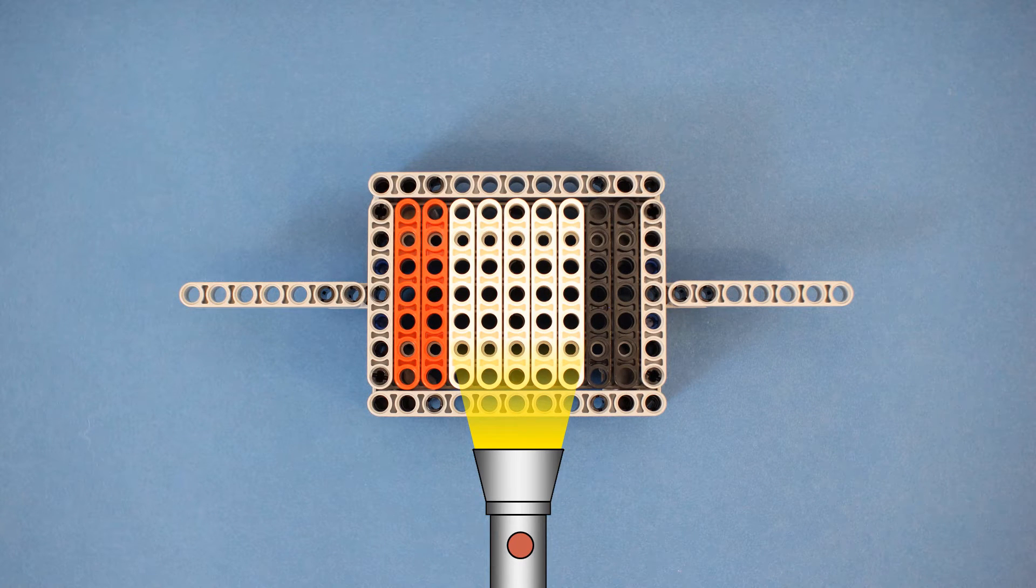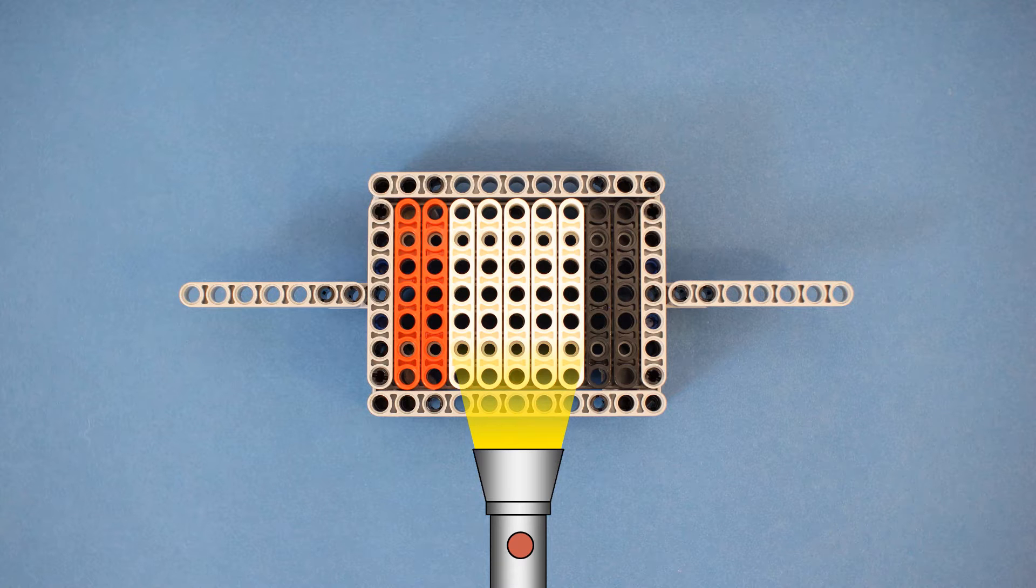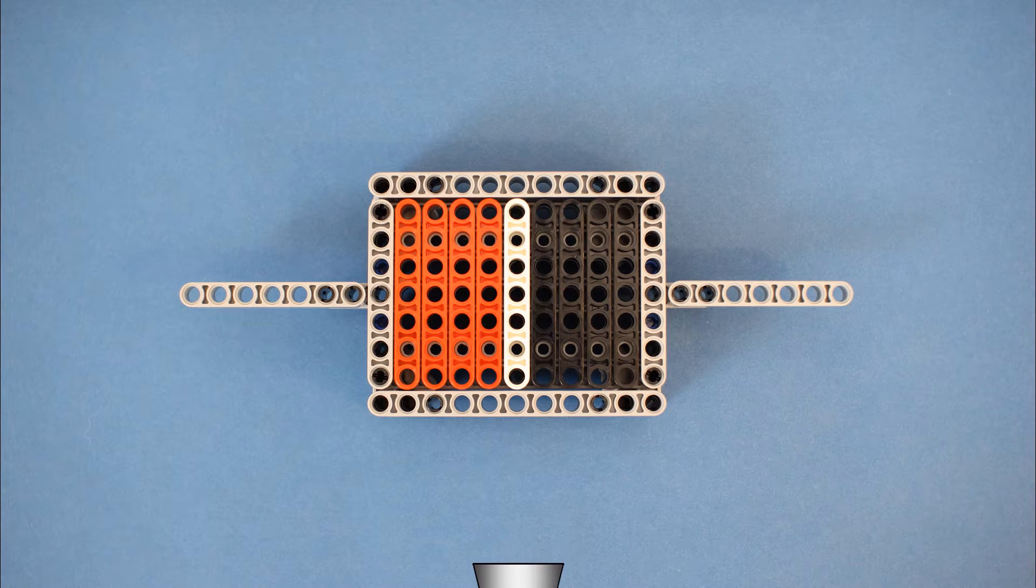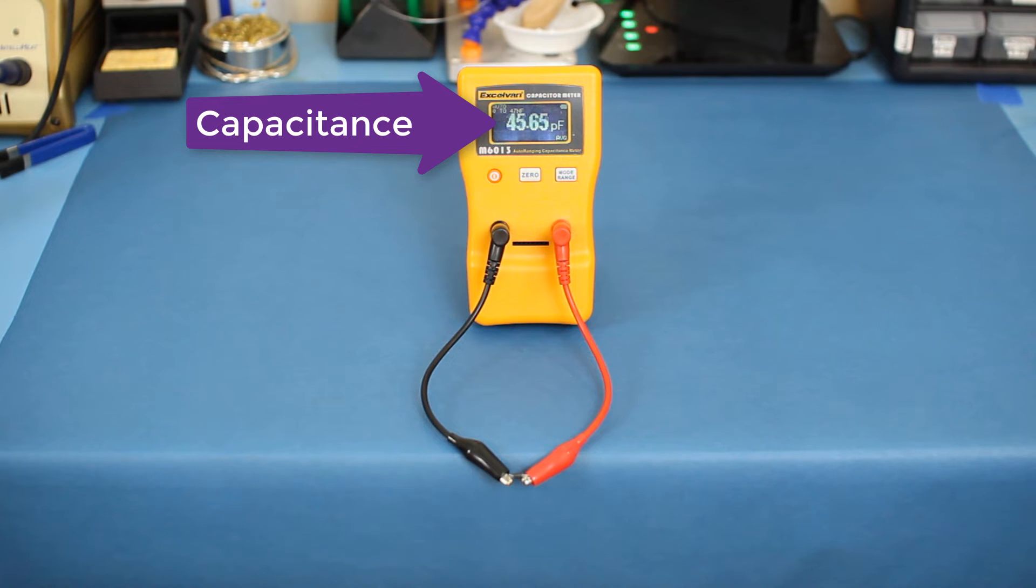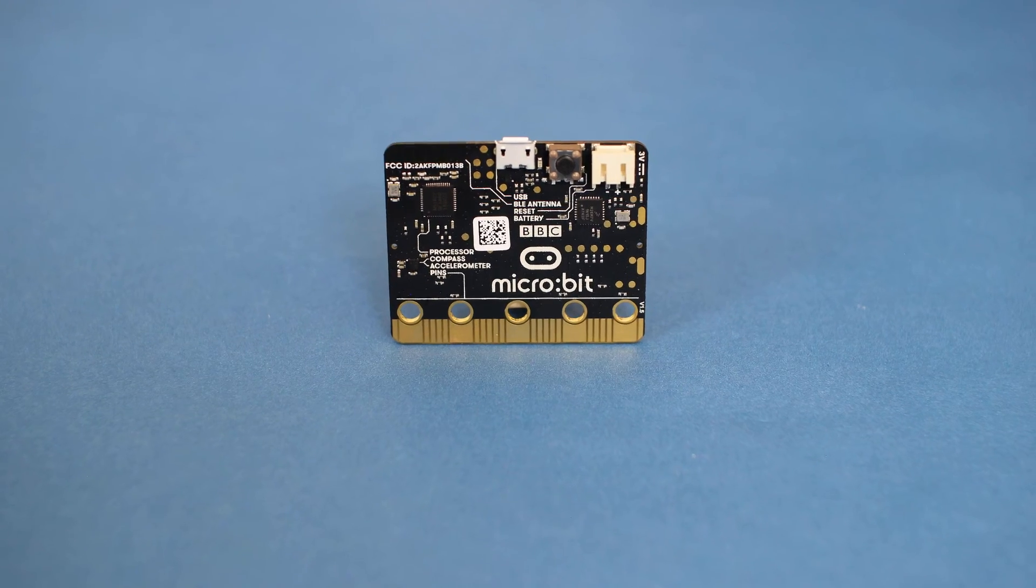I connected a diode to a capacitance meter. As I heat up the diode, you can see the capacitance value increase, which shows that the depletion region is shrinking inside the diode. When I remove the heat, the diode cools off and the capacitance value returns to normal.